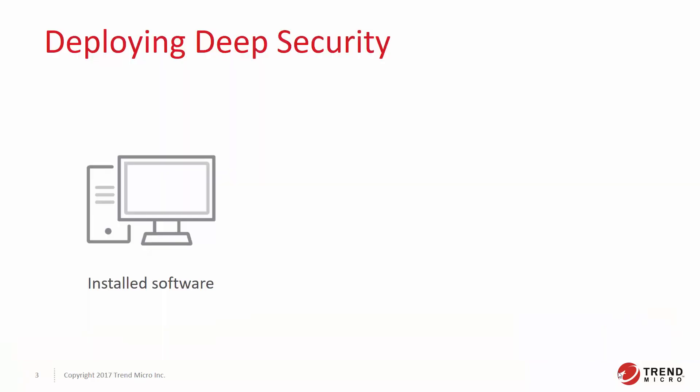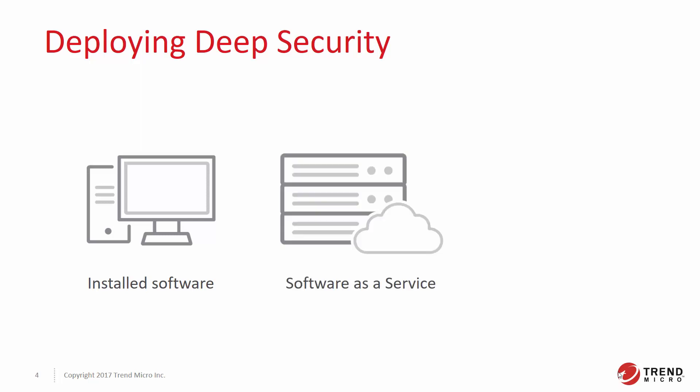Deep Security can be deployed to protect your network in a few different ways. It can be deployed as installed software. You can buy Deep Security software and install it on a local Windows or Linux server, on an Amazon Web Services instance, or on an Azure virtual machine. Deep Security can also protect virtual machines on a single VMware server or VMware images through ESXi. Deep Security can also be deployed as a service, delivering a complete set of security capabilities for cloud workloads through a software as a service model.